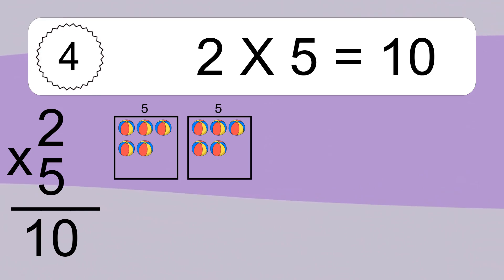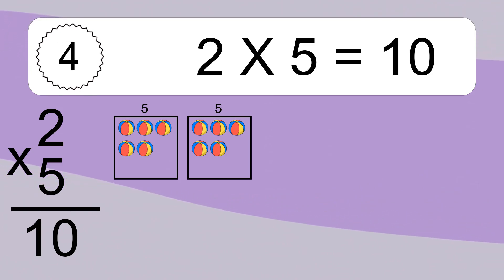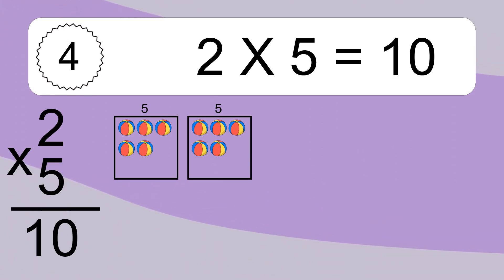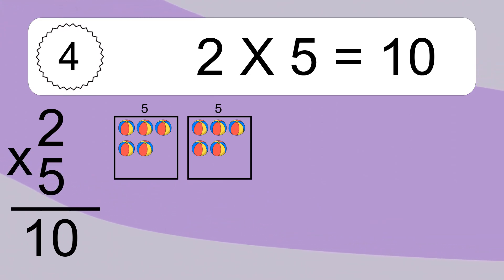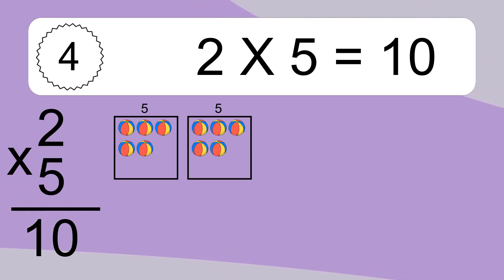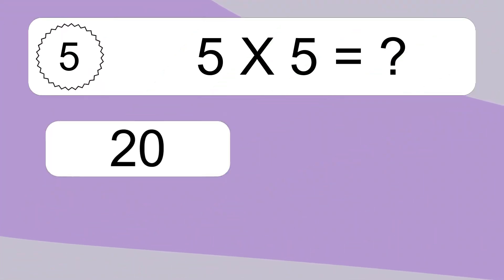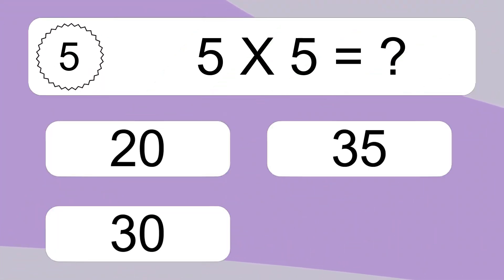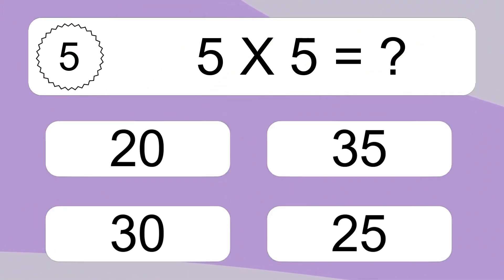2 times 5 equals what? We have 2 boxes, and each box has 5 colorful balls inside. If you count all the balls in all the boxes together, you will have 2 times 5 balls. This equals 10 balls.